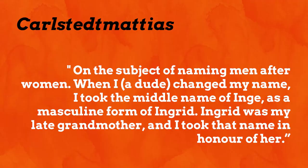Carl's Ted Matthews said, on the subject of naming men after women: when he changed his name, he took the name Inga as a masculine form of Ingrid — Ingrid was his late grandmother and he took that name in honour of her. That is so cool. I love hearing about men being named after women — that's a prime example of it.